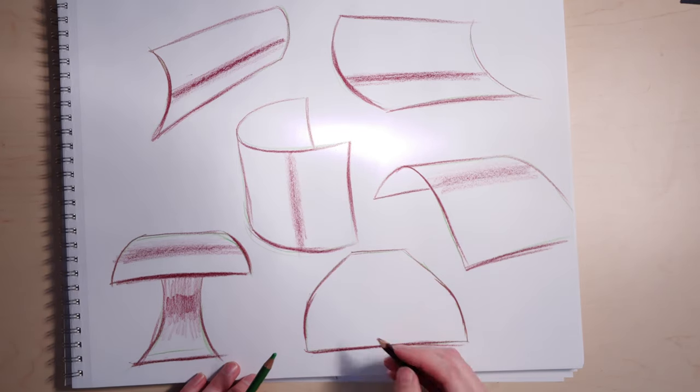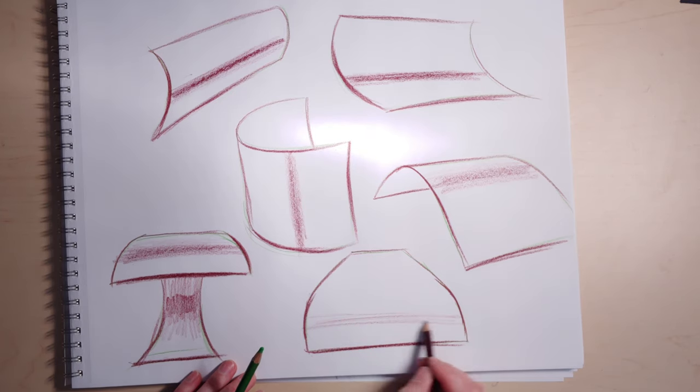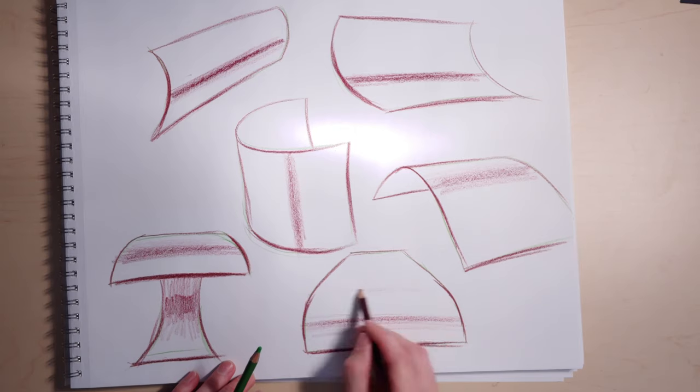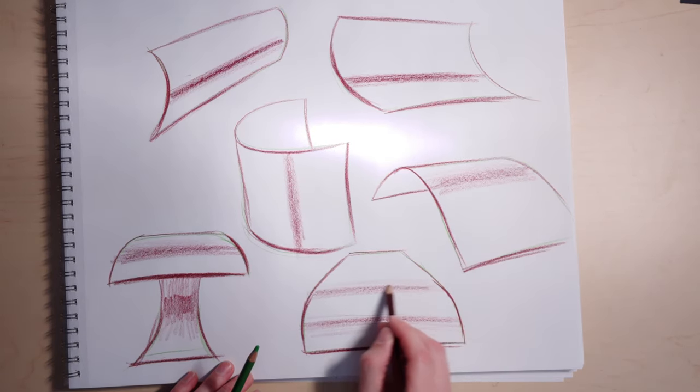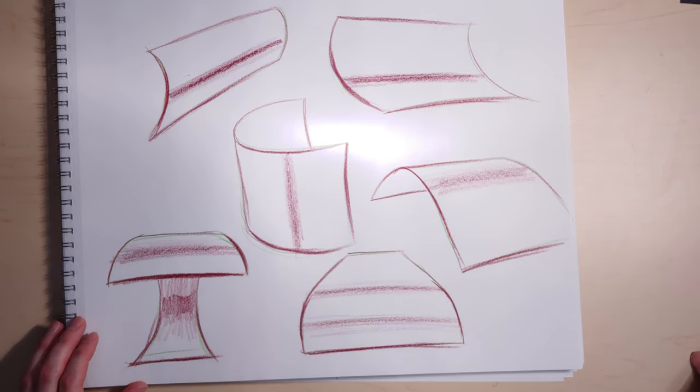Whenever there's a line on the ground, you can make it darker and heavier to make it feel like there's a ground shadow. And again, every time the plane sort of changes direction in a major way, you can put a little bit of a tone down to help that plane turn in space a little bit more.